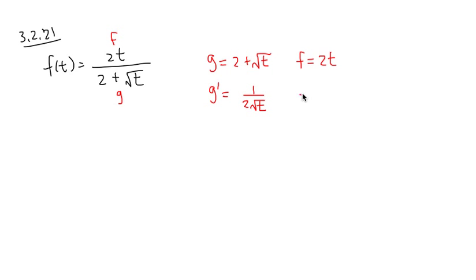We continue with this. f prime is equal to 2. Derivative of 2t is just 2. And now we're ready. I'm going to apply the quotient rule.